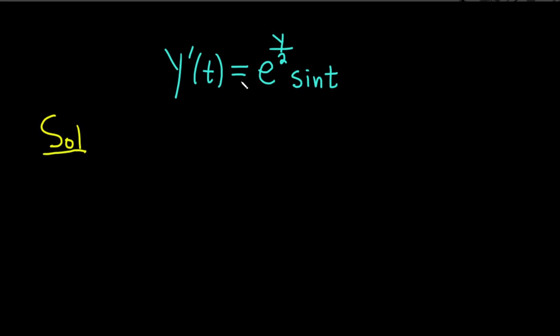The first thing I want to do is write this differential equation in a way that's just a little bit easier to solve. So we can write y prime of t like this, dy/dt. And then over here on the right hand side we still have everything here. So this is e to the y over 2 times the sine of t.